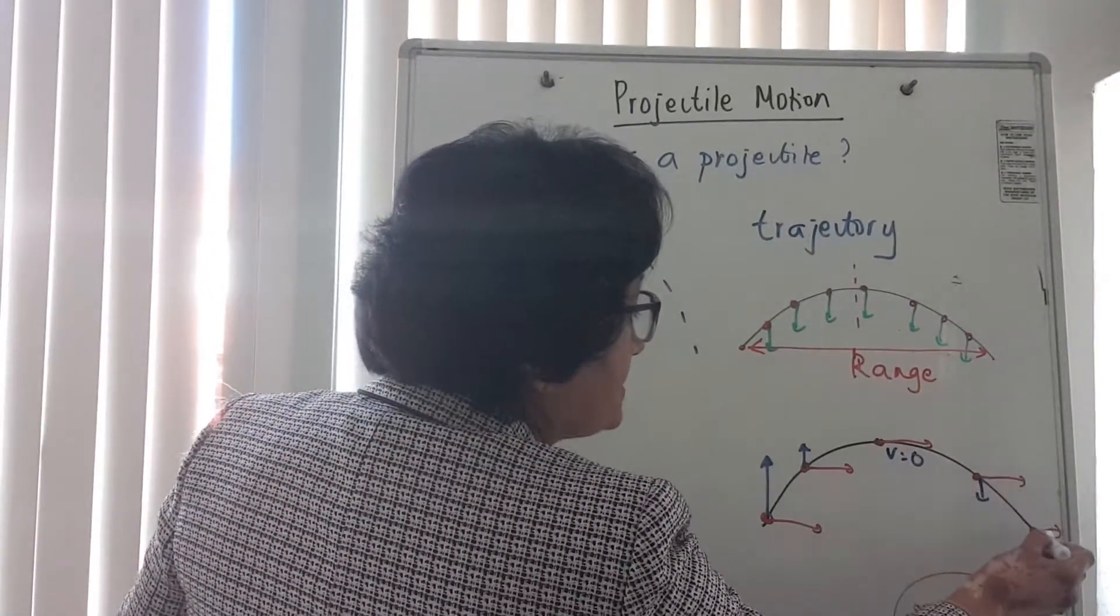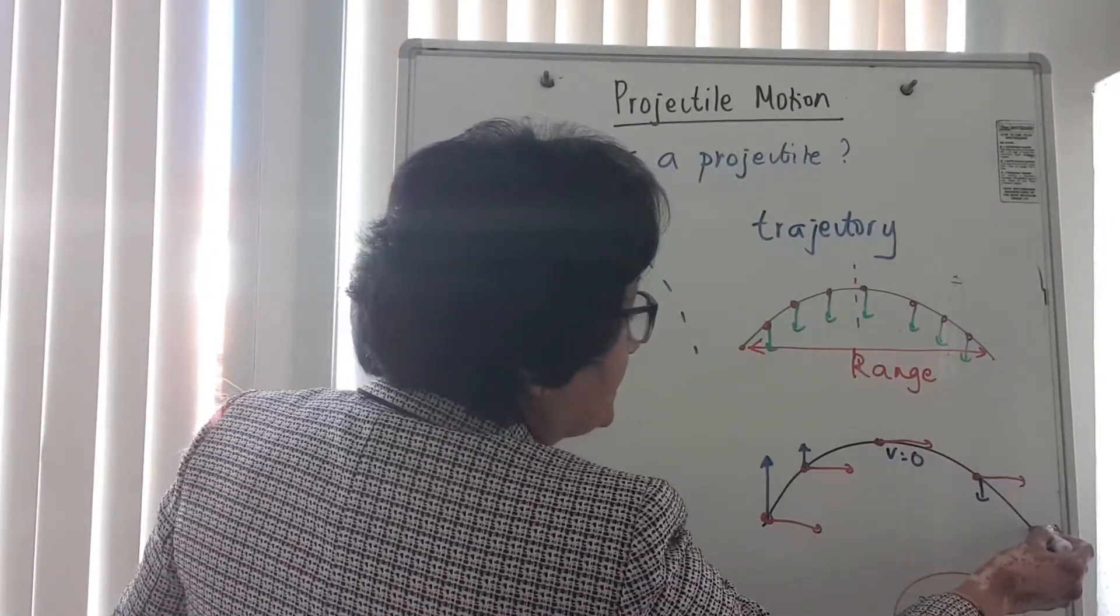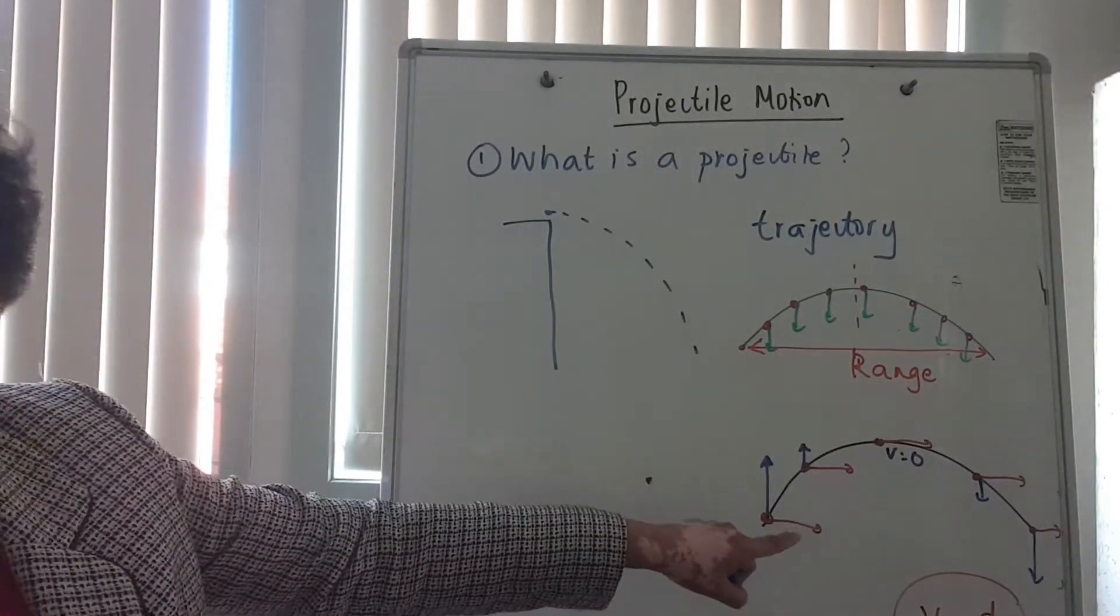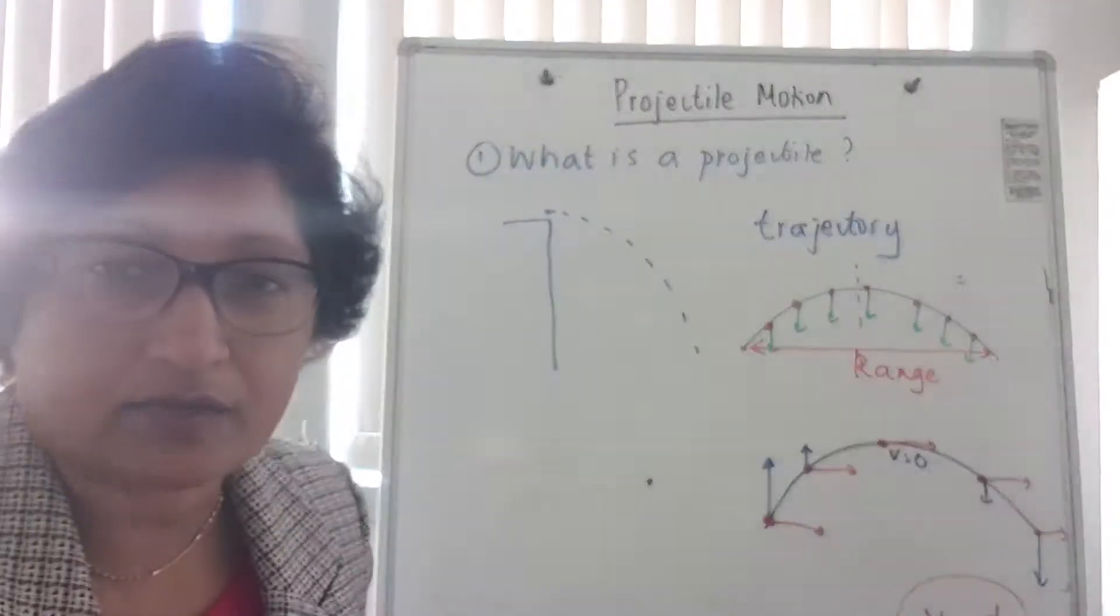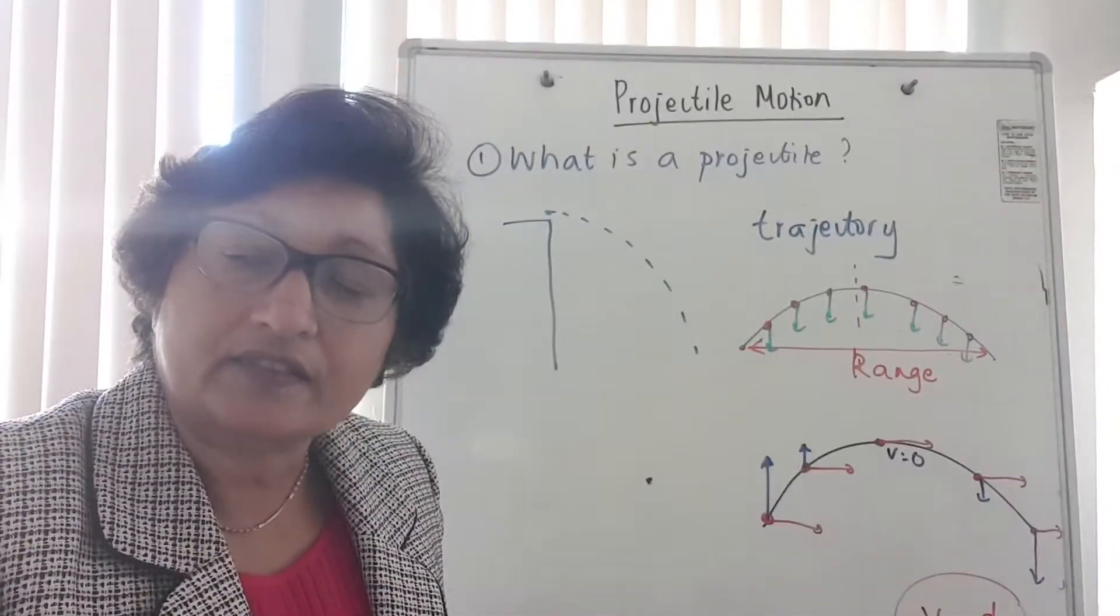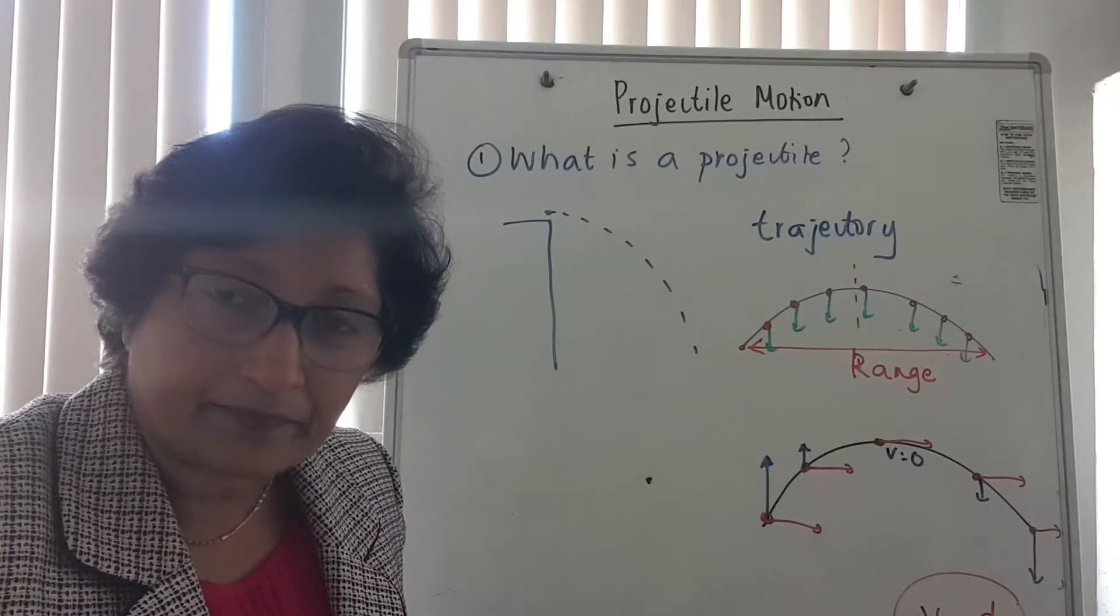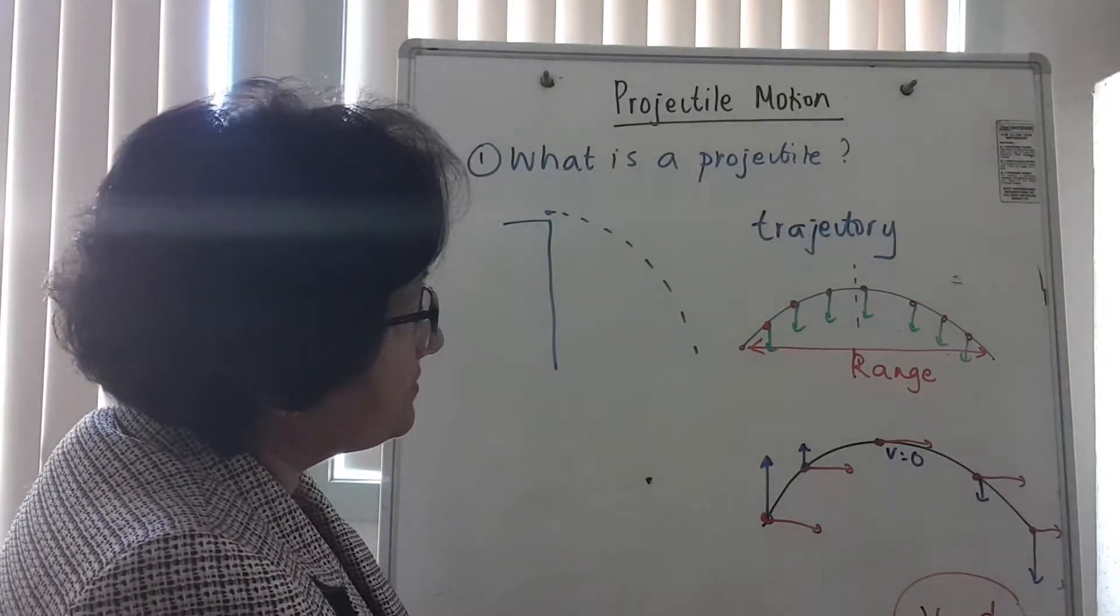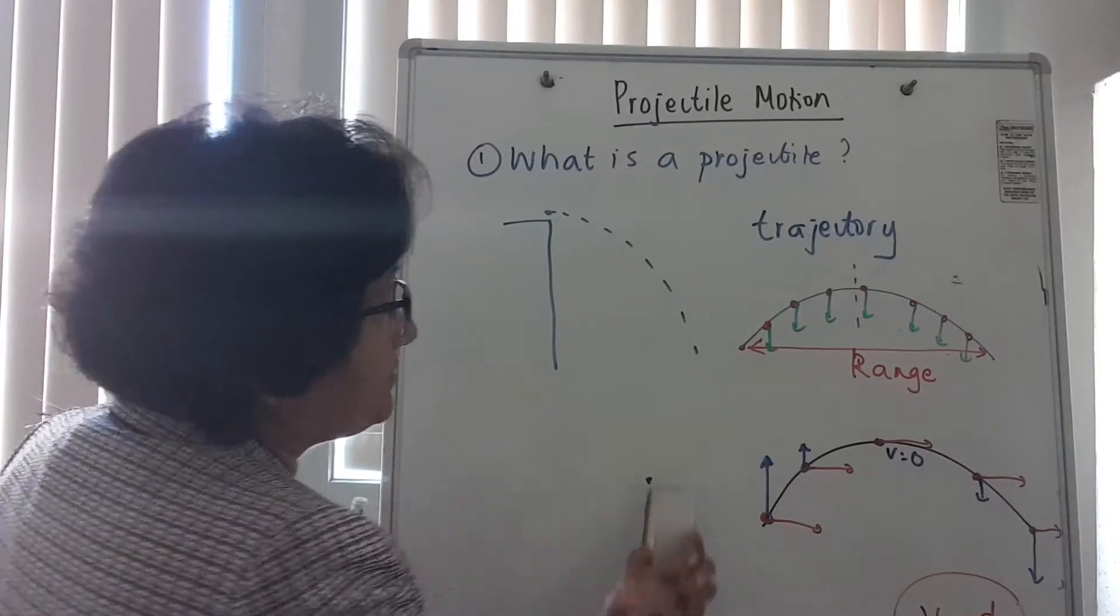And then it starts to go down, and as it goes down, its speed keeps increasing. So when it lands on the ground, the speeds are maximum but in the downward direction. So the second diagram here is to do with the velocity of a projectile. The other thing that's really important is because it's a parabola and it is symmetrical.